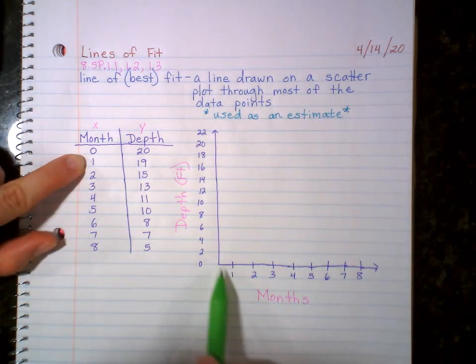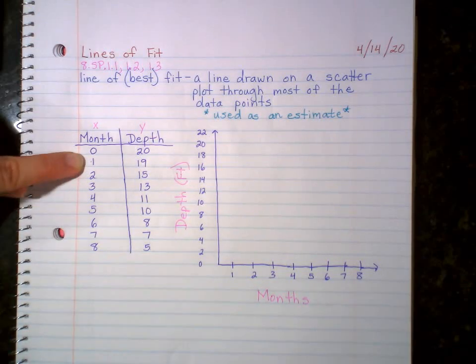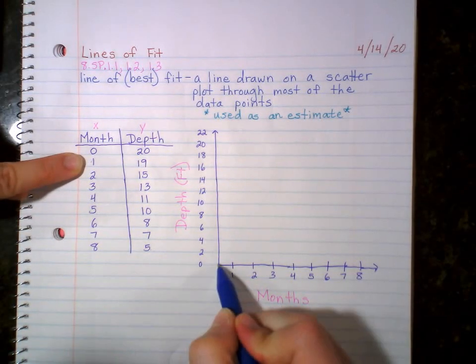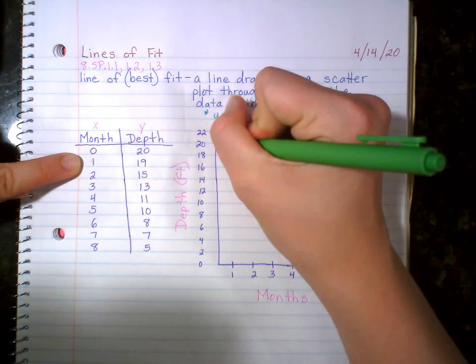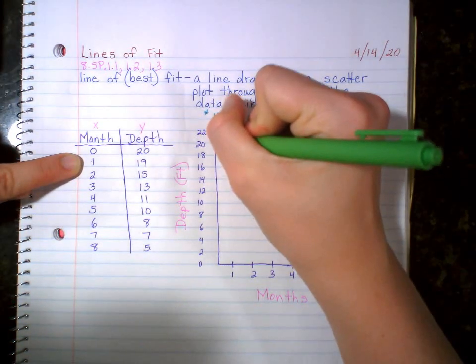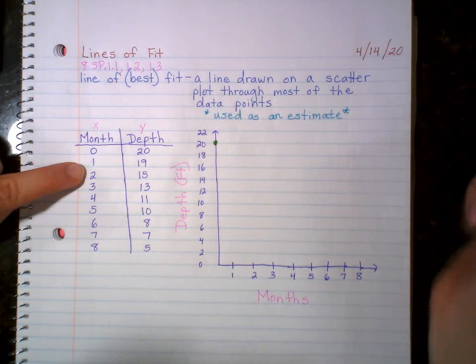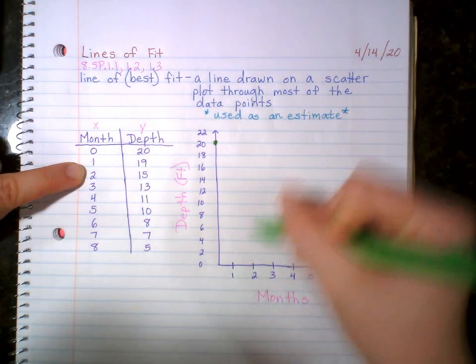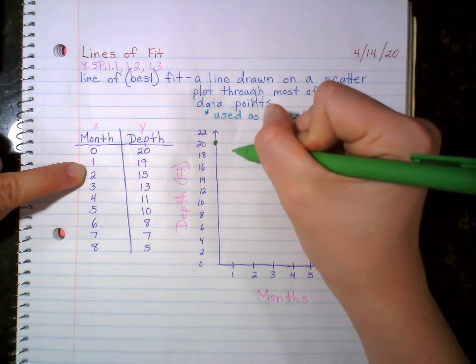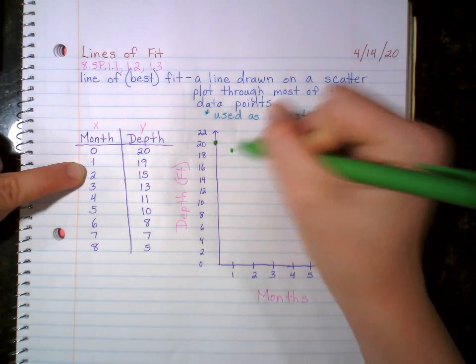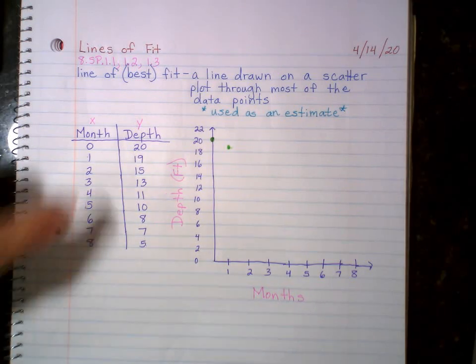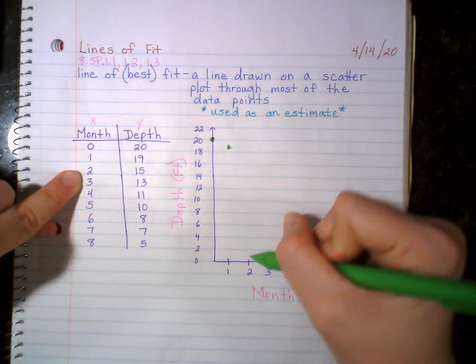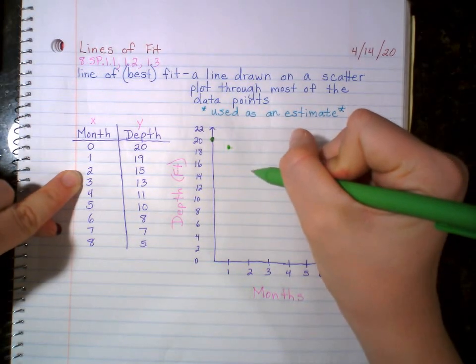So try plotting these points on your own, practice plotting. You guys haven't plotted in a hot minute. So let's do it. Let's do it together, but try it on your own. 0, 20. So it's 0 months. Okay. That's literally just 0, 0 right here, but the depth is 20 feet. So it's up here. 0 for the X, 20 for the Y. 1, 19. So we go over 1, up 19. Obviously it's easier with graph paper, but it is what it is. If you have graph paper, feel free to do it on the graph paper. 2, 15. 2, 15.